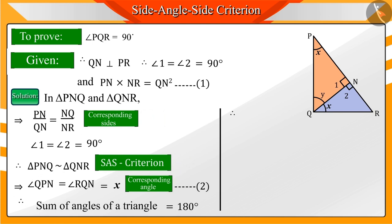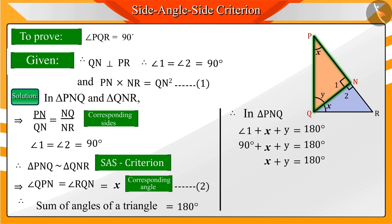Hence, in triangle PNQ, the sum of x and y would be 90 degrees. And in the given figure, we can see that angle PQR is the sum of x and y.